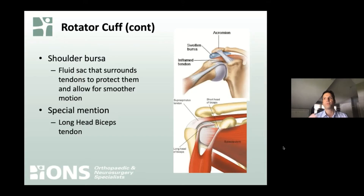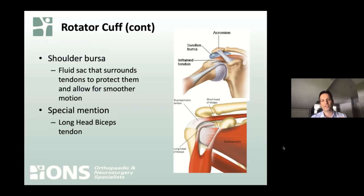What is the shoulder bursa? A lot of people have been told they have bursitis, whether in the shoulder, hip, or somewhere else. The bursa is really just a fluid sac that's typically relatively empty. It surrounds the tendons to protect them, allow for smoother motion, and as you move the bones, it prevents the tendons from rubbing up against the neighboring bone.